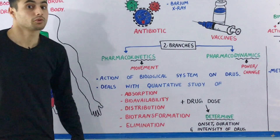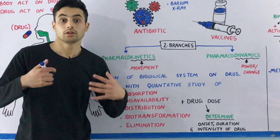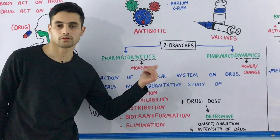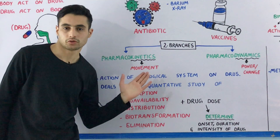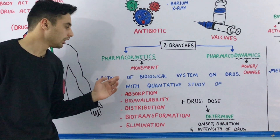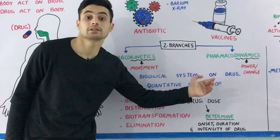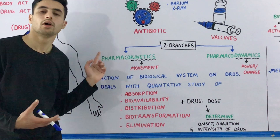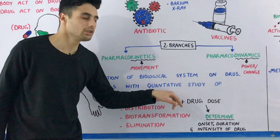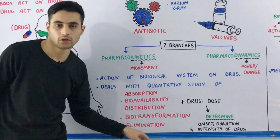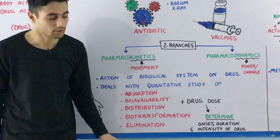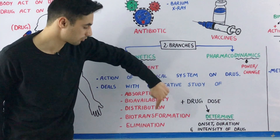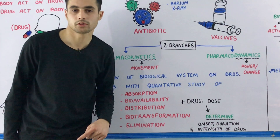When you take a drug, the body immediately acts on the drug — this is pharmacokinetics. Kinetics means motion or movement. In other words, it is the action of biological systems on the drug. It deals with the quantitative study of variables that determine pharmacokinetics. These variables are absorption, bioavailability, distribution, biotransformation, and the elimination of the drug from the body.